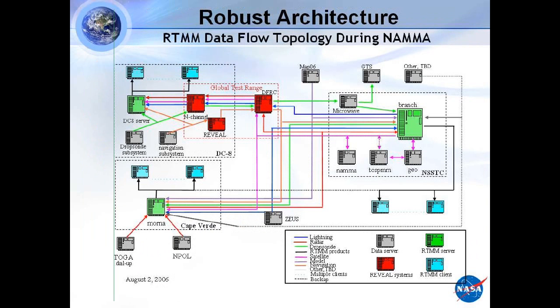What enables it? It is Google Earth. People say, 'Oh, we're just using Google Earth.' It is a mashup, but what you're seeing is an example of all the connections you need to make to bring all the data in. For NAMA, we had computers and systems on the DC-8, in Cape Verde, in Dryden, at NASA Marshall — all connected. The real work behind the real-time mission monitor is knowing where the data is and how to get it.